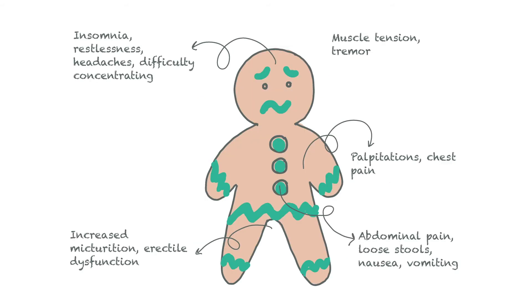Physical symptoms of anxiety are often present, including insomnia, muscle tension, tremor, restlessness, chest pain, difficulties concentrating and headaches. Autonomic hyperactivity may also be present, which manifests as sweating, dilated pupils and tachycardia. GAD is very common, with between 2-4% of the UK population being affected, and it affects more females than males.